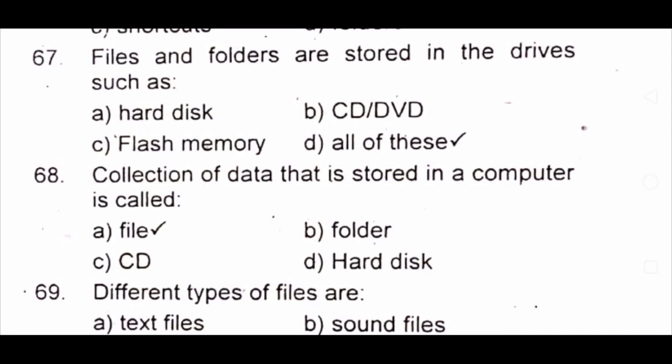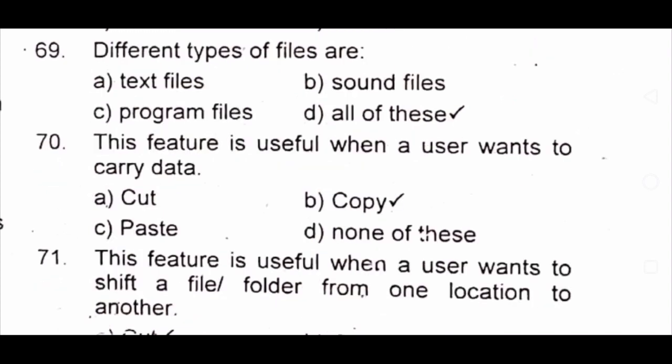Question 68: A collection of data stored in a computer is called A) file B) folder C) CD D) hard disk. The answer is A) file. Question 69: Different types of files are A) text files B) sound files C) program files D) all of these. The answer is D) all of these. Question 70: This feature is useful when a user wants to carry data. A) cut B) copy C) paste D) none of these. The answer is B) copy.